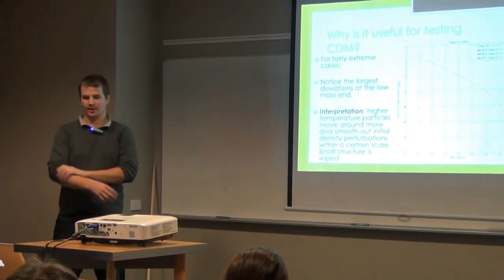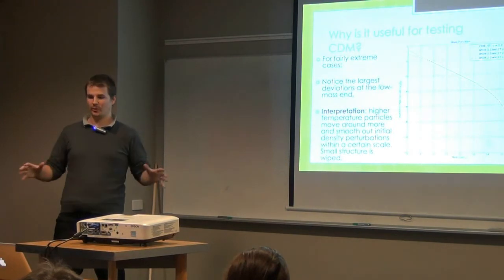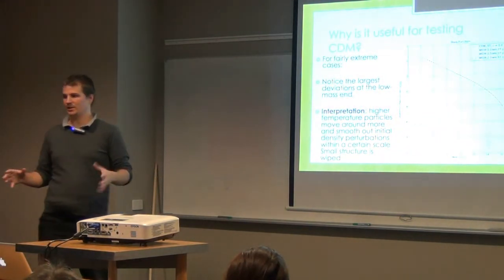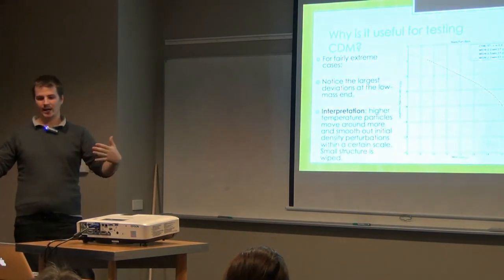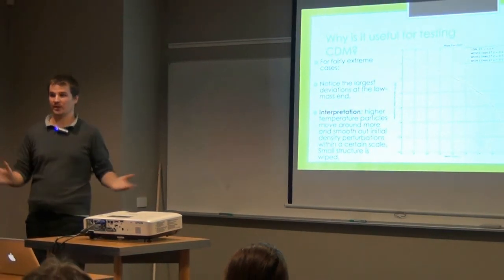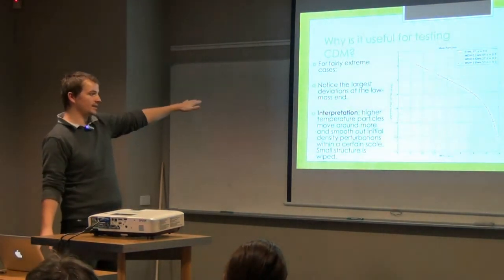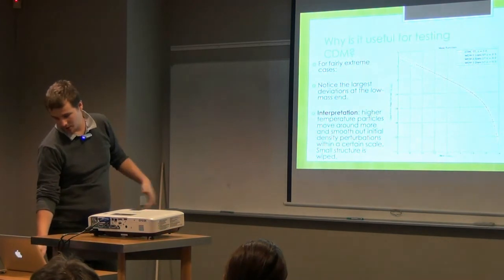The interpretation is quite simple. High temperature particles move around more and they smooth out the initial density perturbations within a certain scale. So the small scale structure is wiped out from the initial perturbations. And that's why it sort of decreases at these low mass ends.